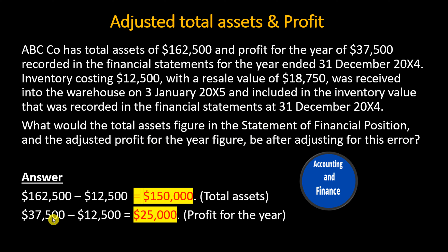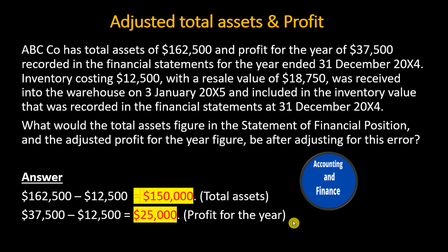Answer. $162,500 minus $12,500 equals $150,000 total assets. $37,500 minus $12,500 equals $25,000 profit for the year.